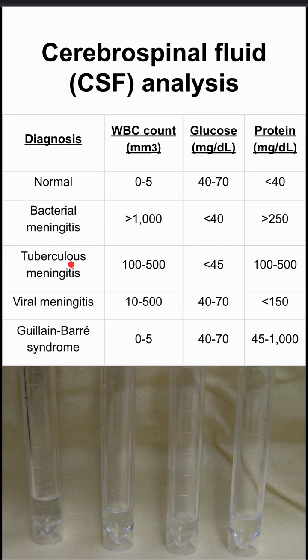Tuberculosis is a bacteria, but it's a slow-growing, fastidious organism. So the white blood cell count will still be elevated, but not nearly as high as in meningococcus, for instance. Your glucose will still be low, because tuberculosis still eats a lot of glucose, and your protein levels range — they could be 100 to 500.